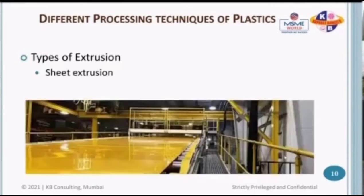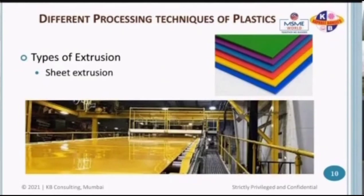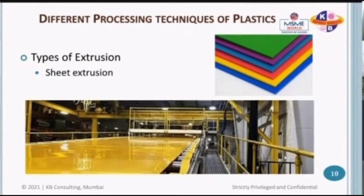Next is sheet extrusion. Different kinds of sheets in different colors are extruded with the help of an extrusion process. You can have one, two, or three extruders creating different layers of sheets — a single layer or multiple layers. These sheets are used throughout industry: for lamination purposes, for creating panels for doors, windows, and rooftops. That is sheet extrusion.